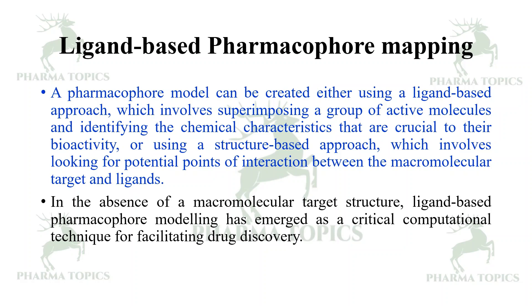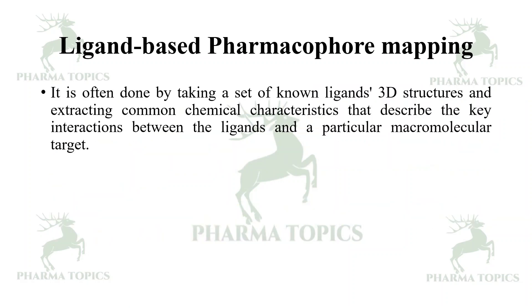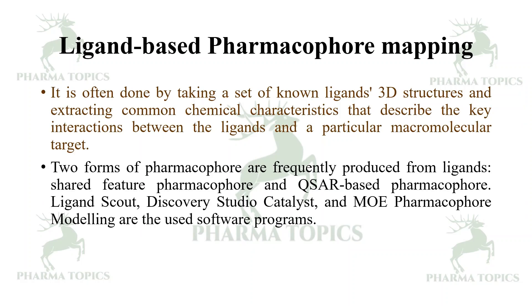Ligand-based pharmacophore modeling has emerged as a critical computational technique for drug discovery. It is done by taking a set of known ligands' 3D structures and extracting common chemical characteristics that describe key interactions between the ligands and the macromolecular target. Two forms of pharmacophore are frequently produced from ligands: shared feature pharmacophore and QSAR-based pharmacophore. Software programs used include LigandScout, Discovery Studio Catalyst, and MOE pharmacophore modeling.